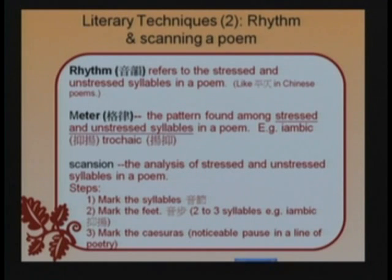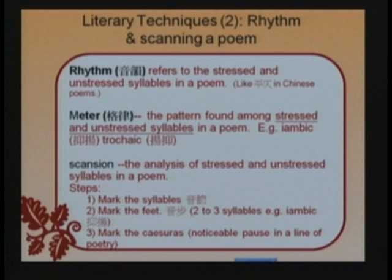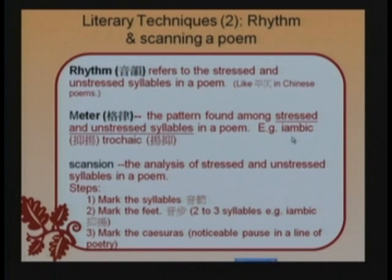Usually when you read, you'll have a sense of where the feet are — they follow the natural divisions of the line. For example, a phrase or a verb phrase is one foot. So the division of feet is actually fairly clear. For instance, 'I am big' — trochaic. The noun phrase 'I am' is one foot, forming a trochee.